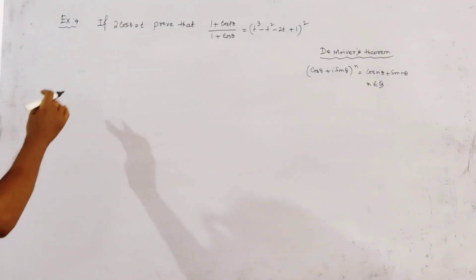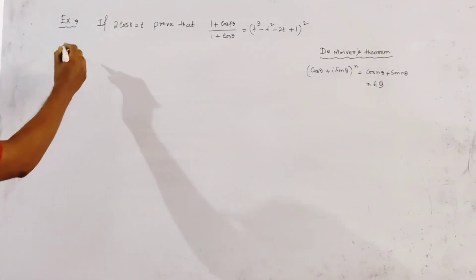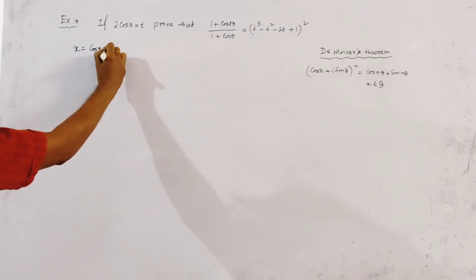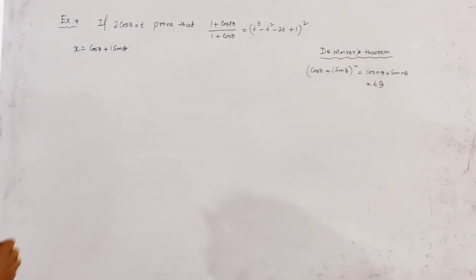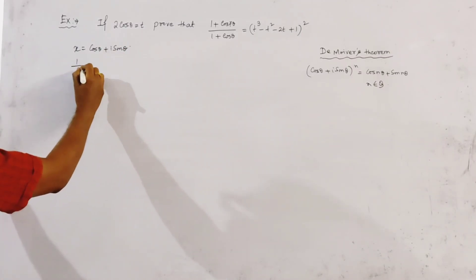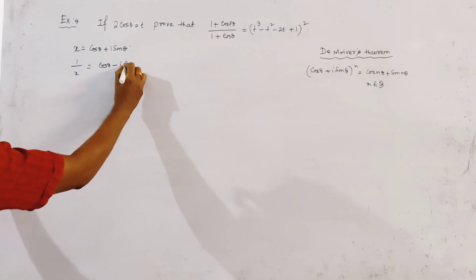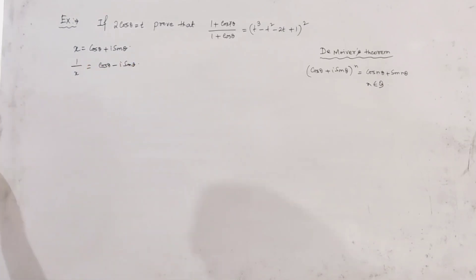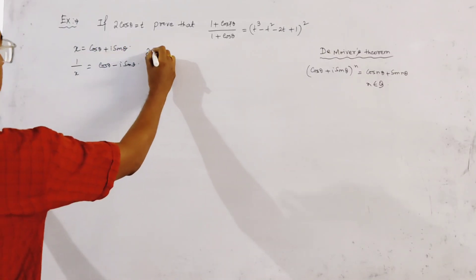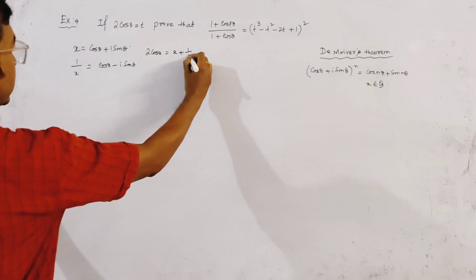In this type of problem, where 2cosθ is given, we first take x = cosθ + isinθ. By De Moivre's theorem, 1/x = cosθ - isinθ. Adding these two, we get 2cosθ = x + 1/x.